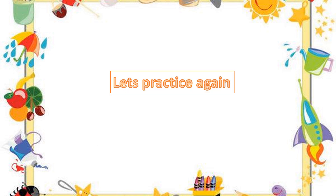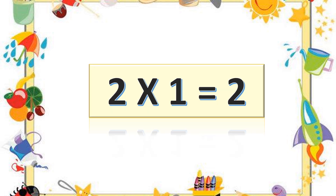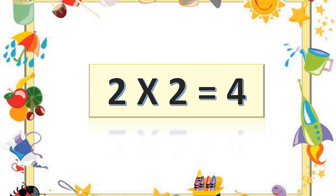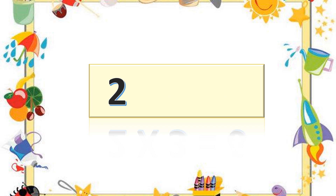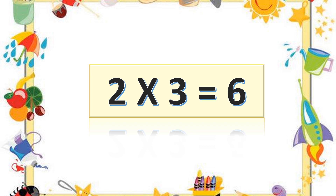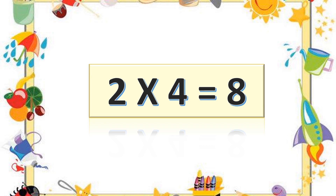Let's practice again. Two ones are two. Two ones are two. Two twos are four. Two twos are four. Two threes are six. Two fours are eight.